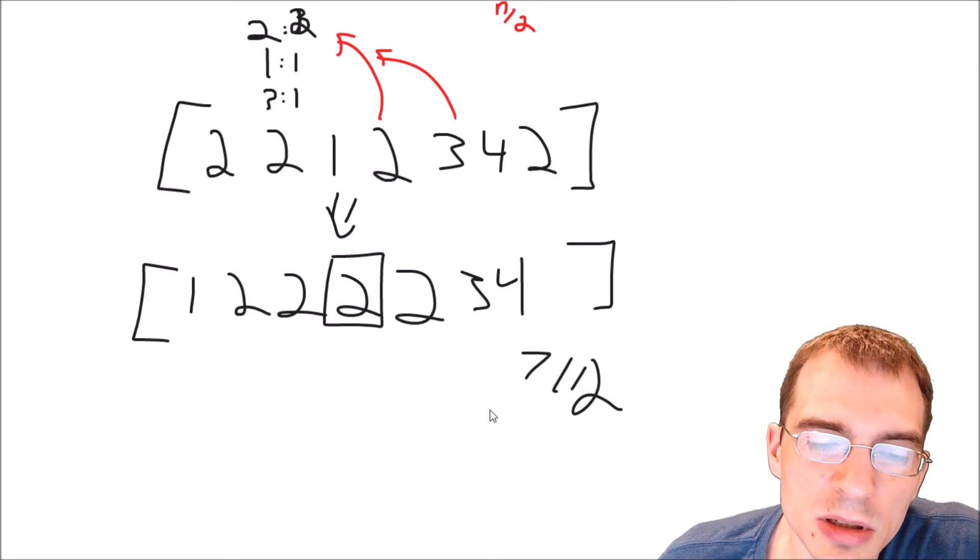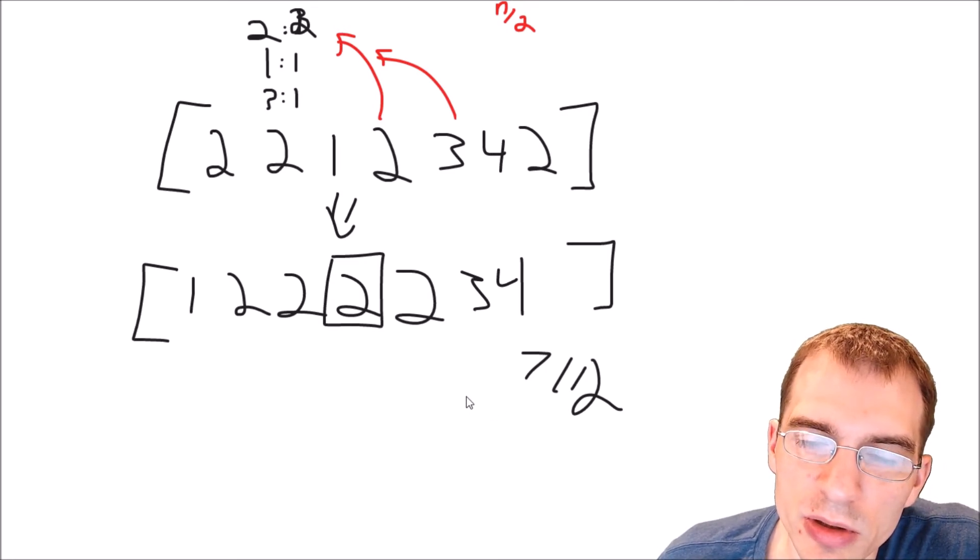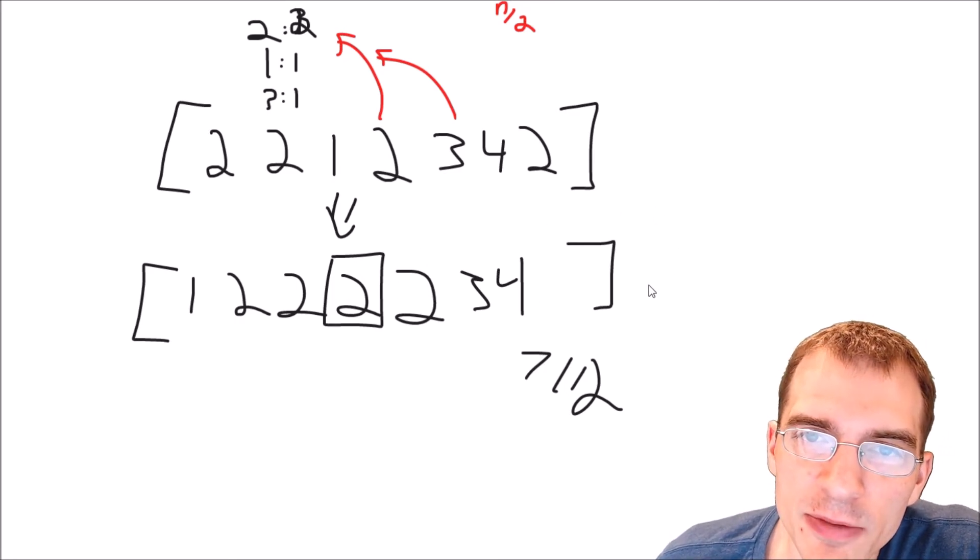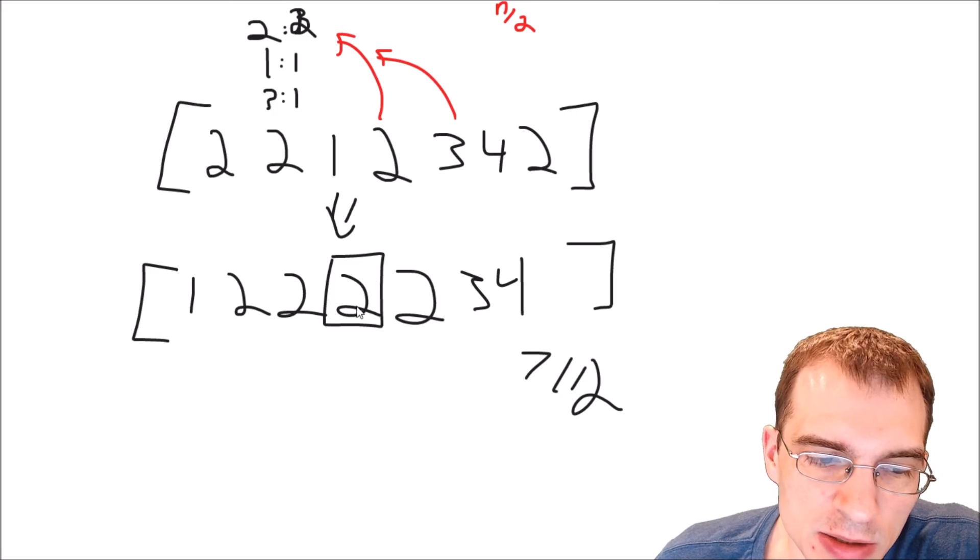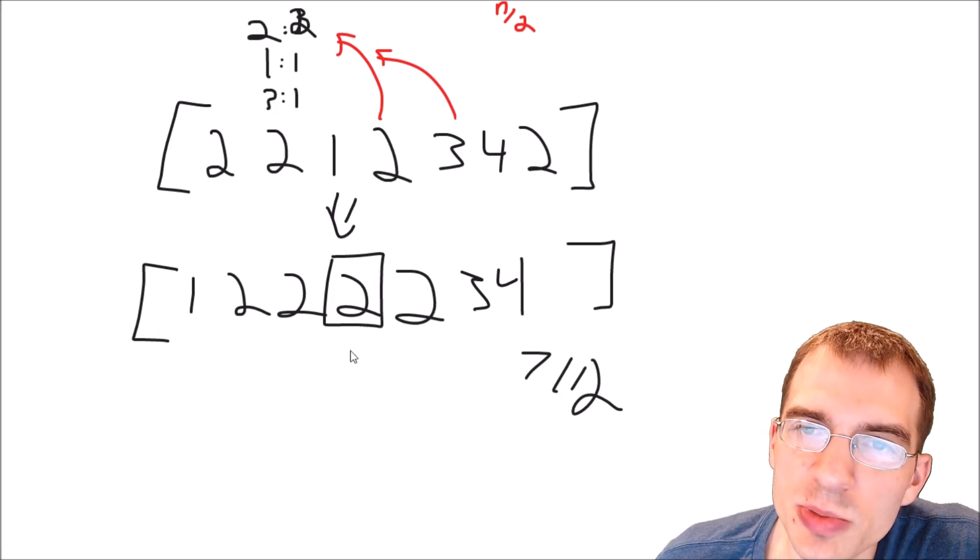The middle element is always going to be the majority element after it is sorted because the majority element has to appear more than half of the length of the array. That means that the middle element after sorting is always going to be the majority element.